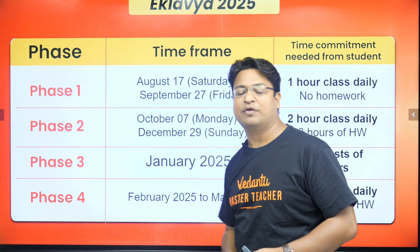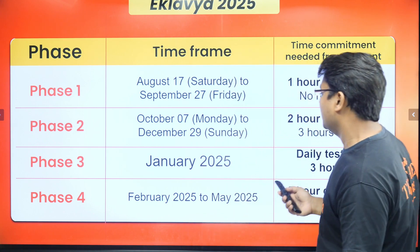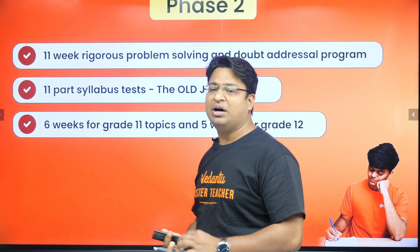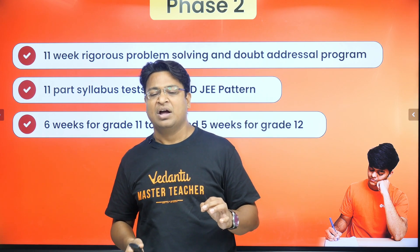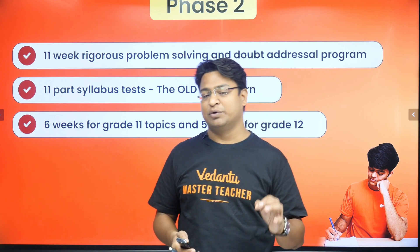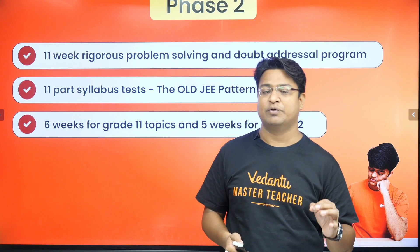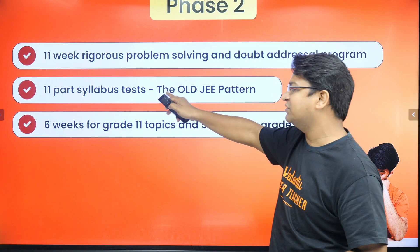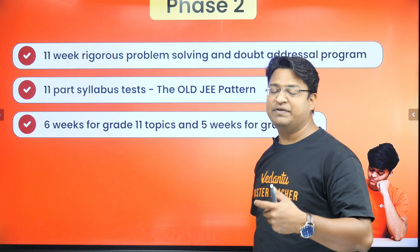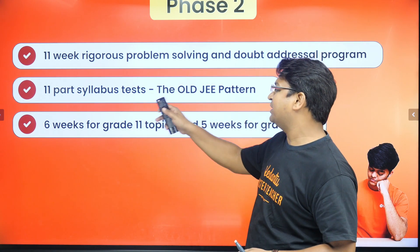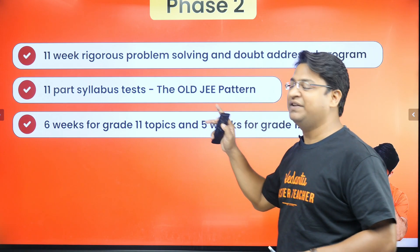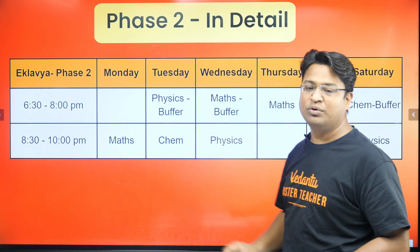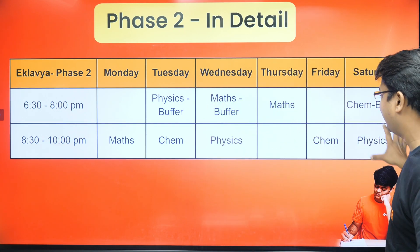In Phase 2 we will be covering the phase in 11 weeks. Six weeks will be devoted to grade 11 and five weeks will be devoted to grade 12. At the end of every week there would be a test on the syllabus that we have covered during the week, and the pattern would be the old JEE pattern.